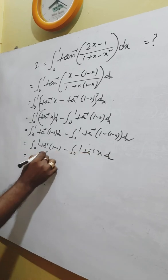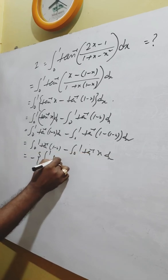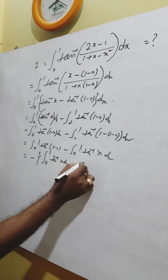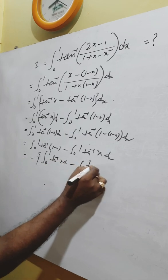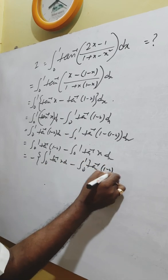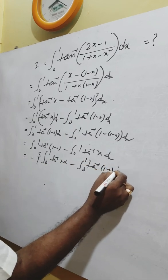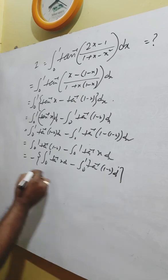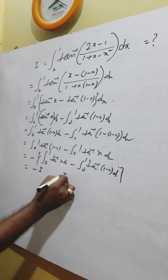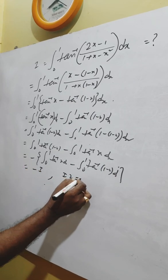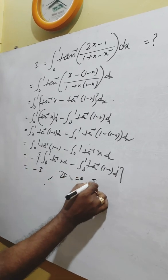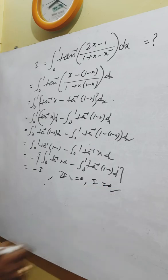Taking this together, we have I equals the integral from 0 to 1 of tan inverse x dx minus the integral from 0 to 1 of tan inverse (1 minus x) dx, which equals minus I. So 2I equals 0, therefore I equals 0.